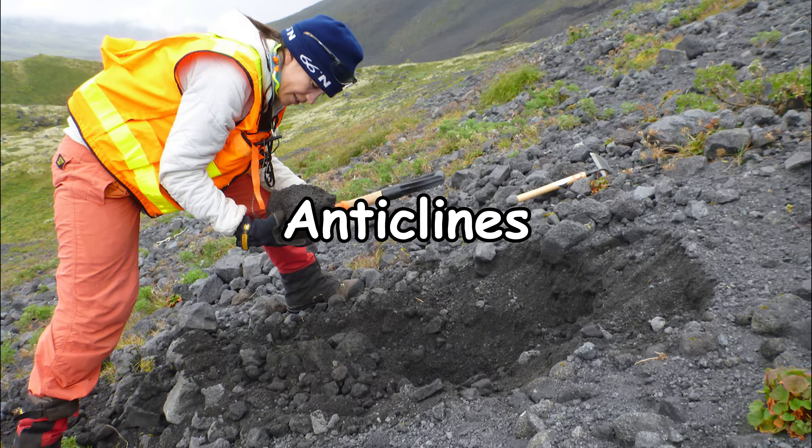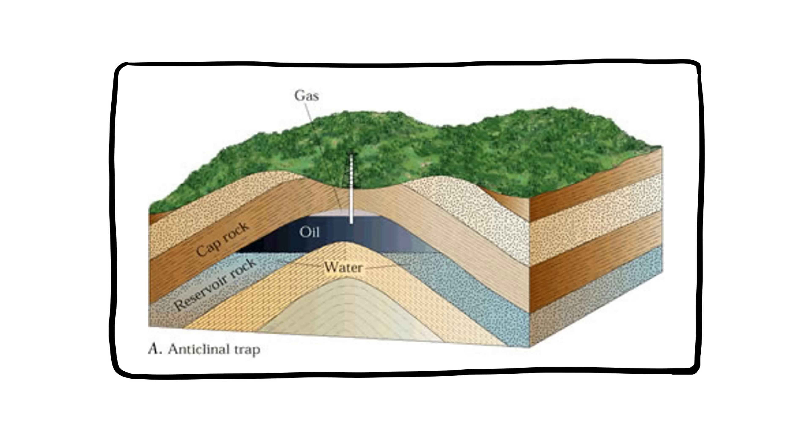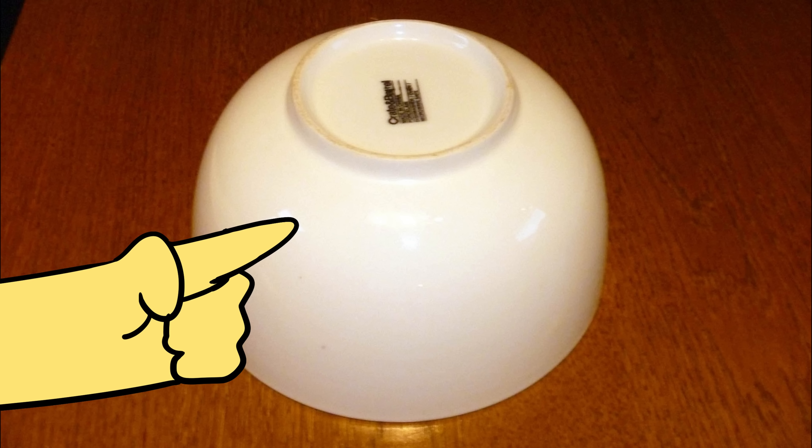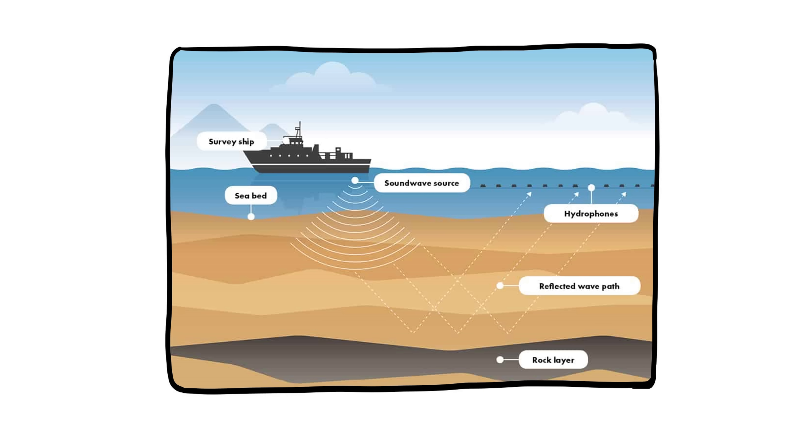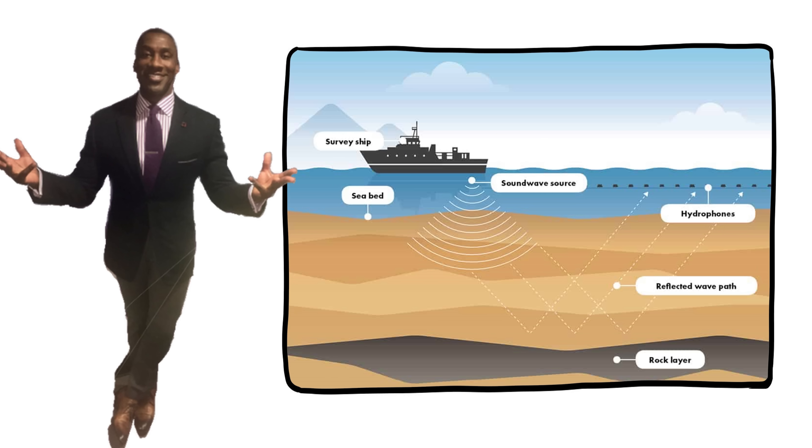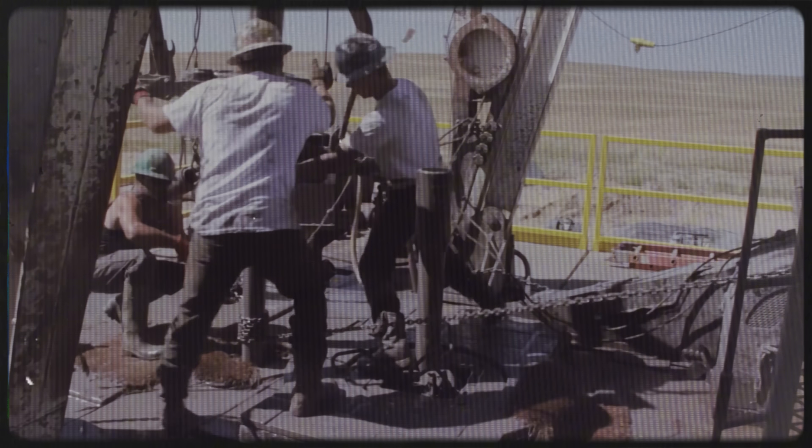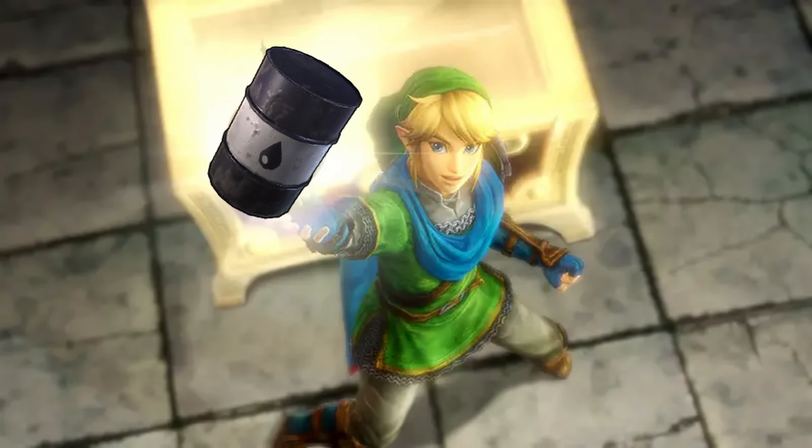They also look for things like anticlines, those arched folds and rock layers where oil might be trapped. Think of it like a bowl flipped upside down, collecting liquid. Of course, sometimes it's a bust, like ordering mystery meat at a diner. Might be treasure, might be disappointment. But when the waves look just right, the oil companies move in. They drill, they test, and if all goes well, you've got yourself a gusher.